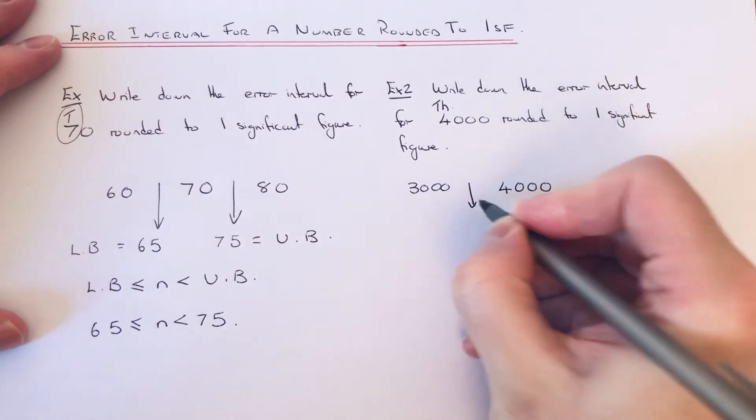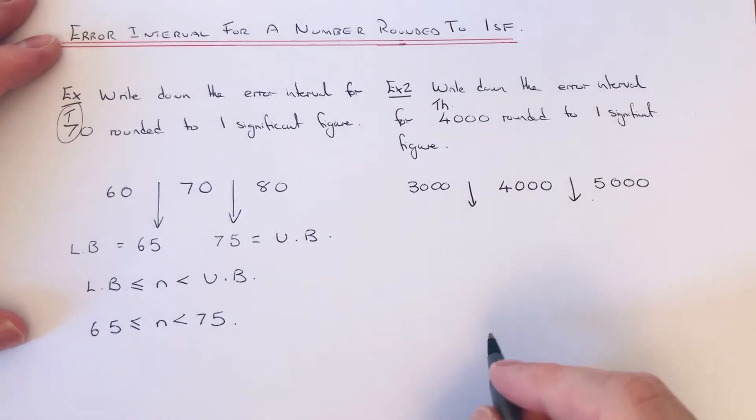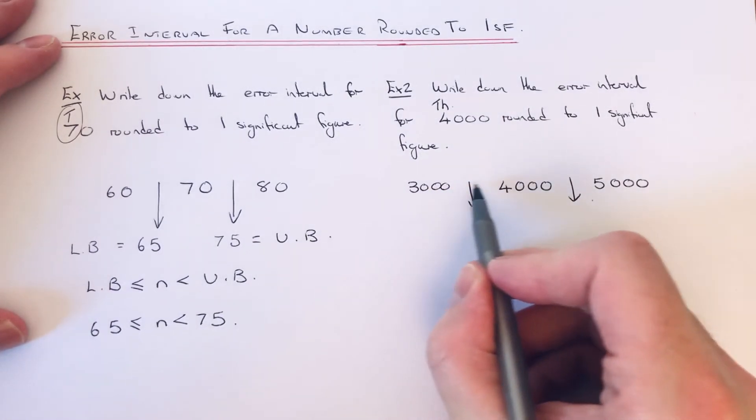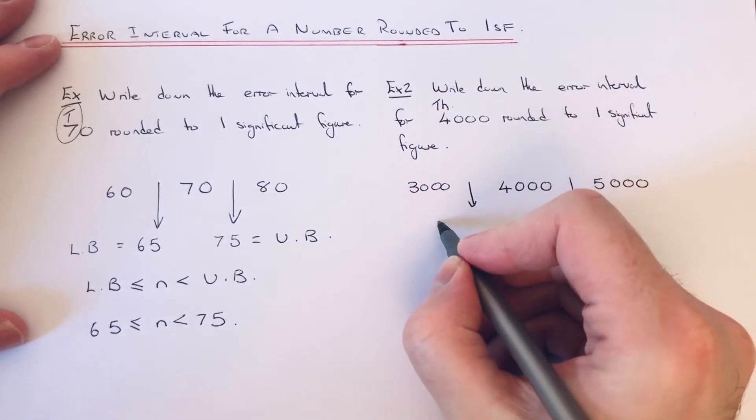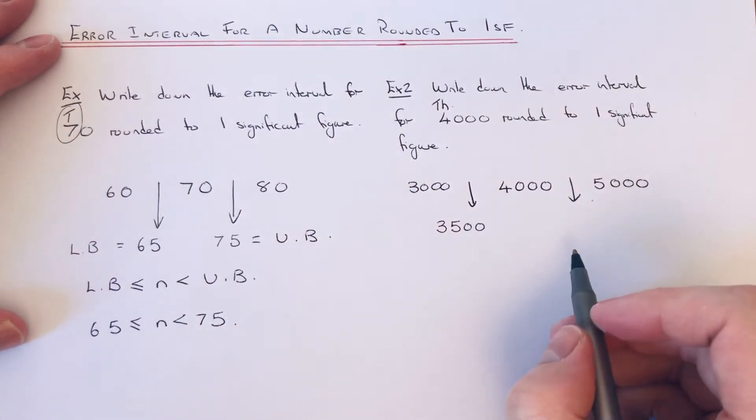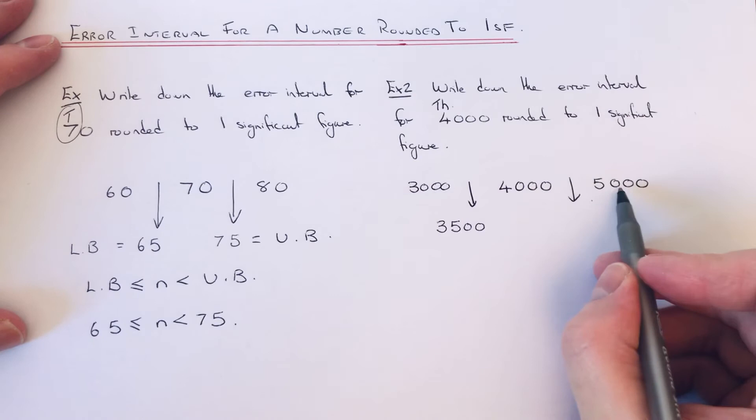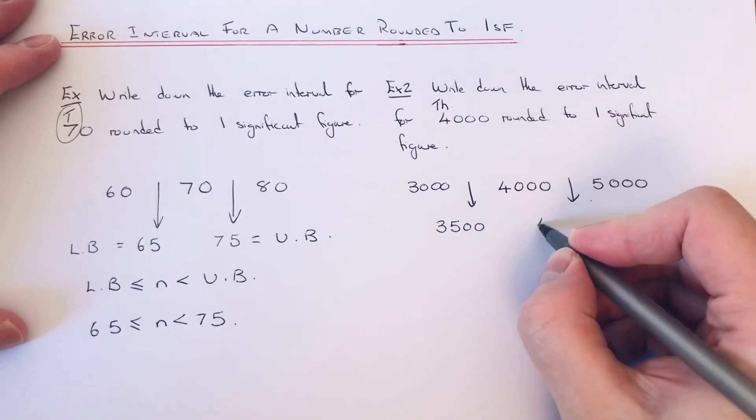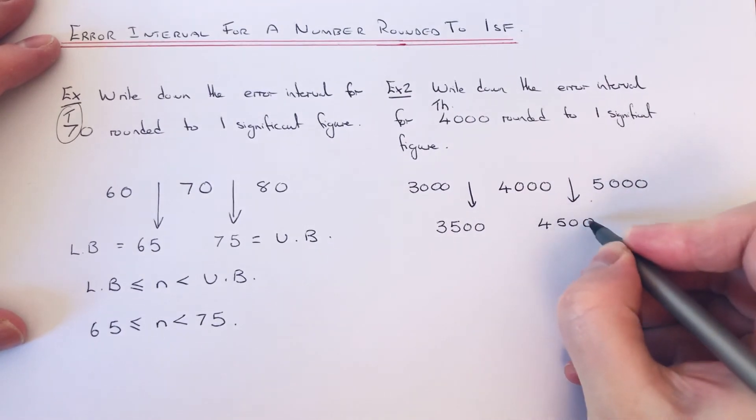So if we take the halfway points, that will give us the lower bound and the upper bound. Halfway between 3,000 and 4,000 is 3,500, and halfway between 4,000 and 5,000 is 4,500.